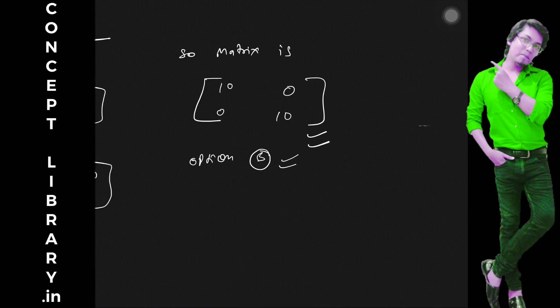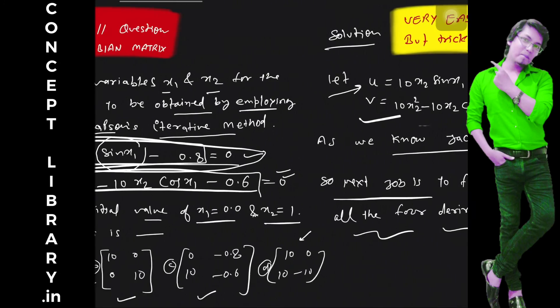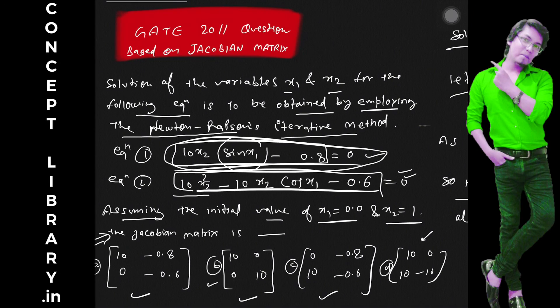So substitute these values here. Option B is the right option for the Jacobian matrix. So this was the question they asked in 2011 based on Jacobian matrix. I hope it is clear, thank you.